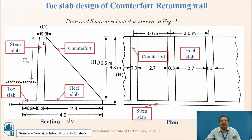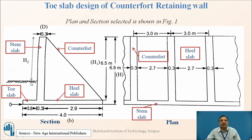Looking at the section, this is the Stem Slab. The projection beyond the Stem Slab — the projection of the entire Base Slab beyond the Stem Slab — is called the Toe Slab. The portion of the Base Slab which is below the Earth Fill is called the Heel Slab. This is a Counterfort. Since this projection is very small — just 0.8 meters — we design this portion as a Cantilever Slab. The design of the Toe Slab is done by considering it as a Cantilever Slab.